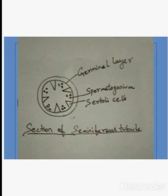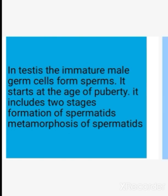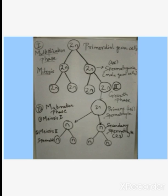Normally, this process starts from the age of puberty, in which there are two stages. The first stage is formation of spermatids, and the second stage is metamorphosis of spermatids. At puberty stage, that means 12 to 13 years of age, the formation starts. We will discuss those stages one by one. First is formation of spermatids. The primordial germ cells are present in the testis.